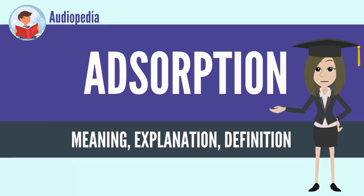Adsorption is the adhesion of atoms, ions or molecules from a gas, liquid or dissolved solid to a surface. This process creates a film of the adsorbate on the surface of the adsorbent. This process differs from absorption, in which a fluid (the adsorbate) is dissolved by or permeates the liquid or solid (the absorbent) respectively.